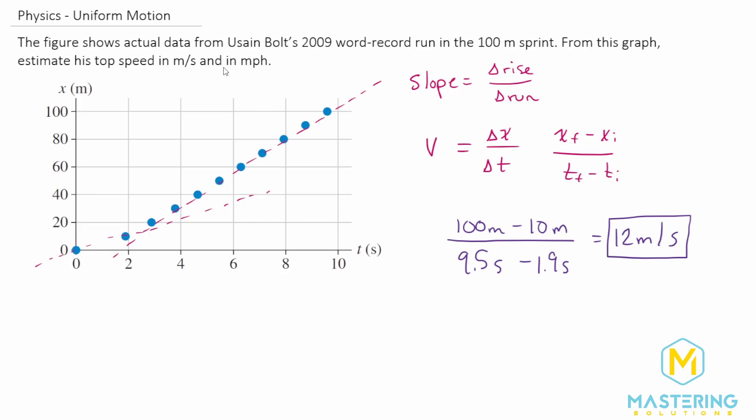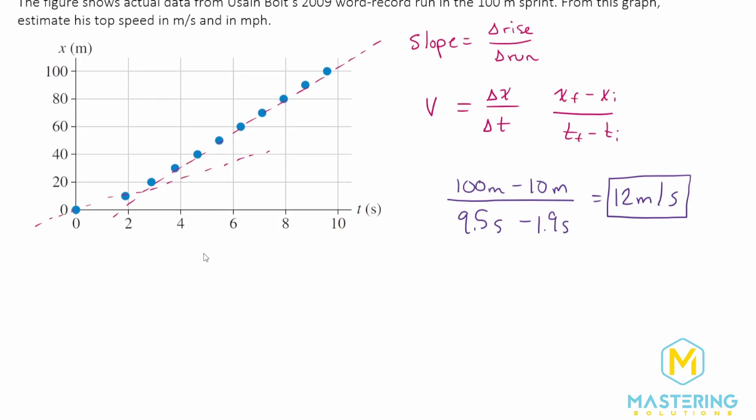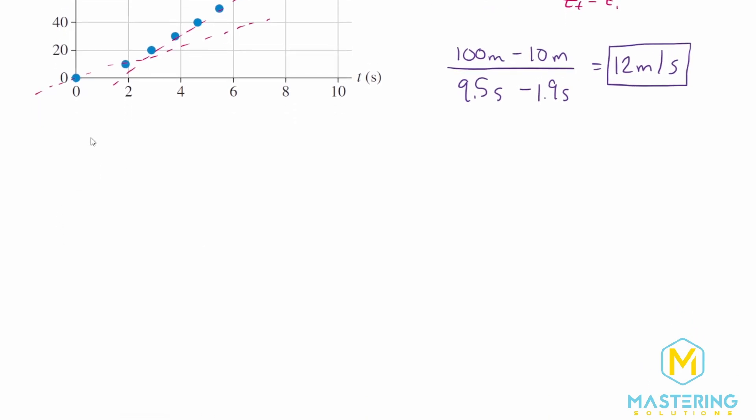Now they want us to do it in meters per second and miles per hour. So let's change this over to miles per hour as well. So we have 12 meters per one second. You can start with either one. I'm going to start with the seconds first. We know in one hour, there are 3,600 seconds. Now the seconds cancel and we're in meters per hour.